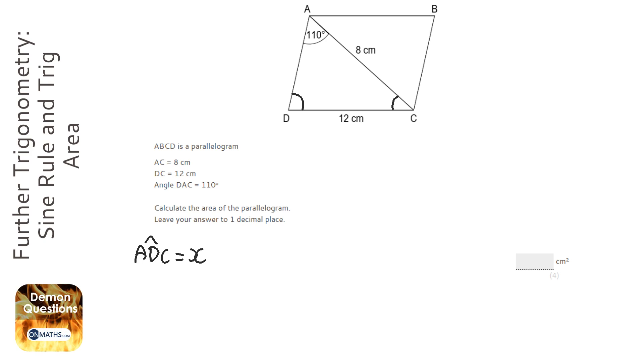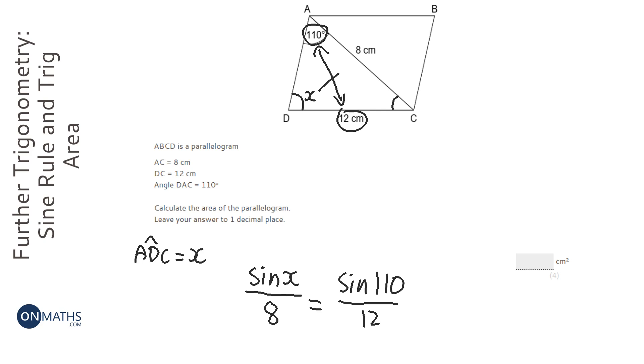I'm going to use the sine rule and that says that sine X over, so this is sine X, this is X here, so it's going to be over 8 equals sine 110 over 12. The reason it has to be that way around is obviously sine matches up opposite angles and lengths. So it's going to be those two and those two.